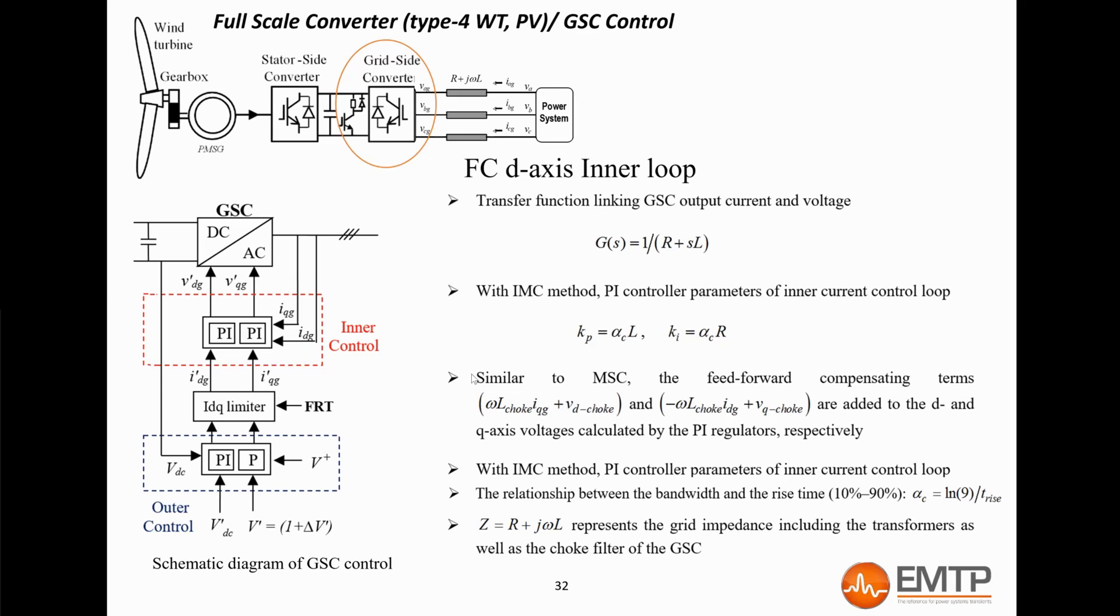To summarize, the outer loop maintains the DC voltage of the DC bus. For example, if the wind increases, the machine-side converter will inject more current into the DC bus in order to get more real power from the wind. This additional injection will tend to increase the DC bus voltage. However, the d-axis control loop of the grid-side converter will maintain the DC voltage to its nominal value by increasing the grid d-axis current, which corresponds to the real power. In the end, the additional power from the wind increase goes through the two converters straight to the grid.